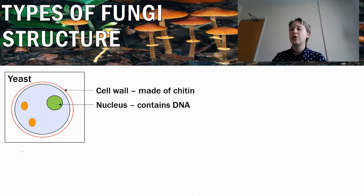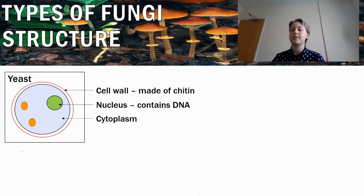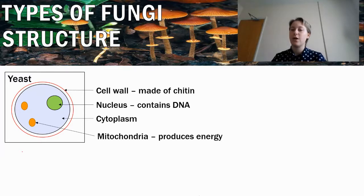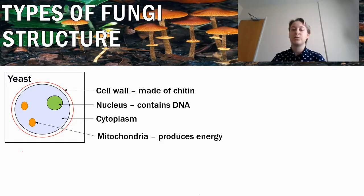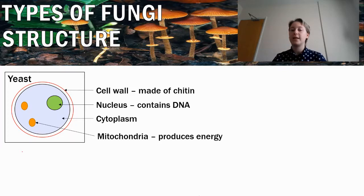We've got our nucleus which holds our DNA, controlling the cell and everything it needs to do. We've got our cytoplasm which holds all the cell parts, and we've got our mitochondria — this cell part produces energy for the cell, allowing it to do everything it needs to do. This energy is produced in a chemical called ATP, and powers things like reproduction.